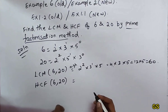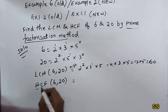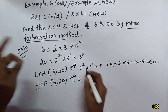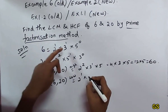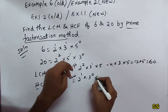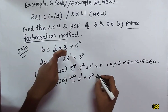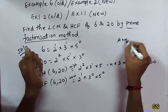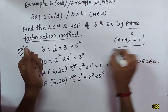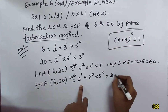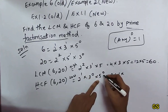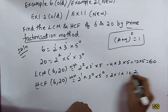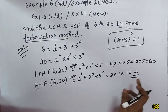HCF of 6 and 20. For HCF we take the lowest powers of the common prime factors. For 2: lowest power is 2 power 1. For 3: lowest is 3 power 0, which equals 1. For 5: lowest is 5 power 0, which equals 1. So HCF equals 2 into 1 into 1, which is 2. HCF of 6 and 20 is 2.